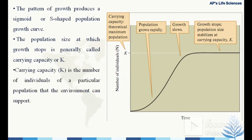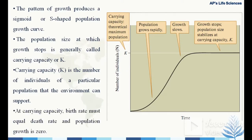Carrying capacity is the number of individuals of a particular population that the environment can support. At carrying capacity, the birth rate must equal the death rate and population growth equals zero. Growth stops at the carrying capacity and the population size stabilizes.